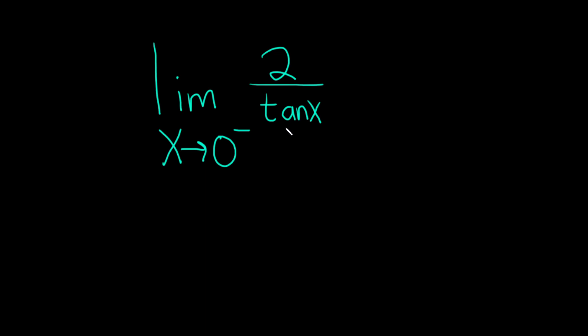So if you just plug in 0, you get tangent of 0 which is 0. So that would be 2 over 0, and that's no good. So we need an alternative way to do this.